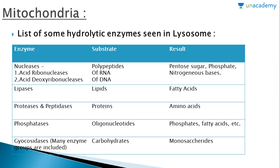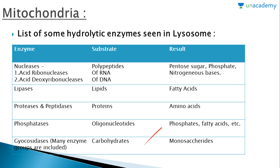Finally, here is a list of hydrolytic enzymes in lysosomes. Nucleases are of two types: acid ribonucleases and acid deoxyribonucleases, with substrates RNA and DNA, producing pentose sugars, phosphates, and nitrogenous bases. Lipase acts on lipid substrates to produce fatty acids. Proteases and peptidases act on proteins to produce amino acids. Phosphatases act on oligonucleotides to produce phosphates. Glycosidases act on carbohydrates to produce monosaccharides. I hope you liked the lesson — keep learning and stay happy!